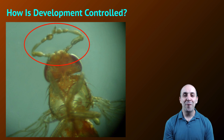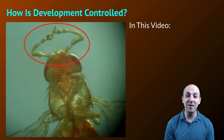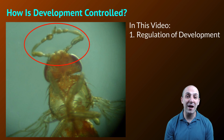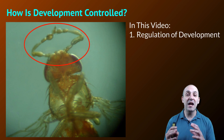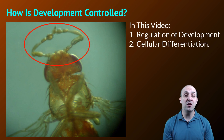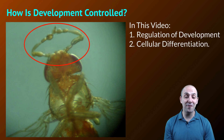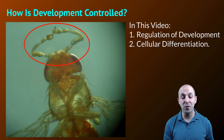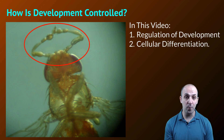I don't know about you, but I think that's probably a situation that's best avoided. In this video, we're going to look at the regulation of development in multicellular organisms in very broad terms. And specifically, we're going to look at the processes that lead to cellular differentiation, or how we get different types of cells produced in an organism where every cell has the same genome.